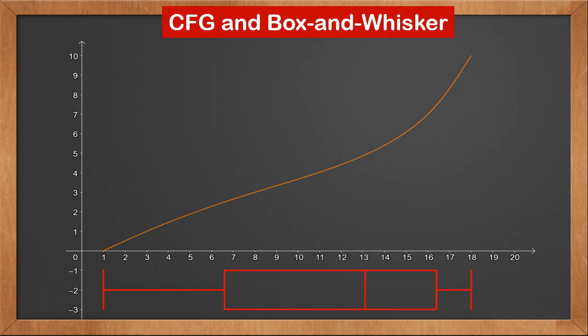If we know the total number of values, n, we can also draw a cumulative frequency graph from the box and whisker plot. We can read the five values from box and whisker, and they are the x coordinates. If we know n, the y coordinates are zero, quarter n, half n, three quarters of n, and n. For n equals ten, they are zero, two point five, five, seven point five, and ten.